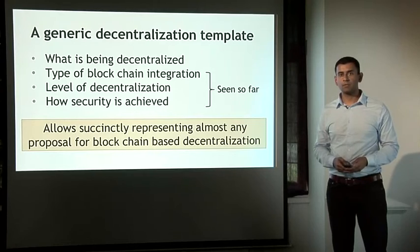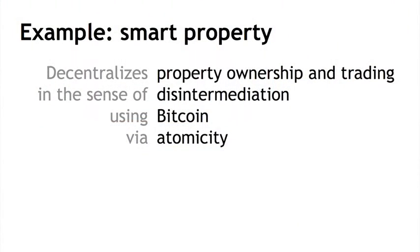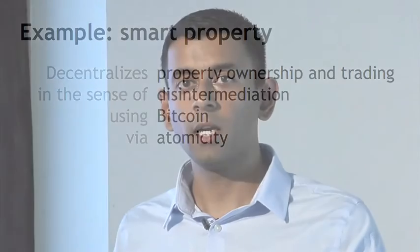Let's go back to smart property. What does smart property decentralize? It decentralizes the notion of property ownership and trading. It decentralizes in the sense of disintermediation — you don't need an intermediary like the state or the DMV anymore. In the example we saw, it was achieved using the Bitcoin blockchain itself, though you could achieve it using any of the other three methods. The key security principle was atomicity — tying together the payment with the transfer of car ownership.